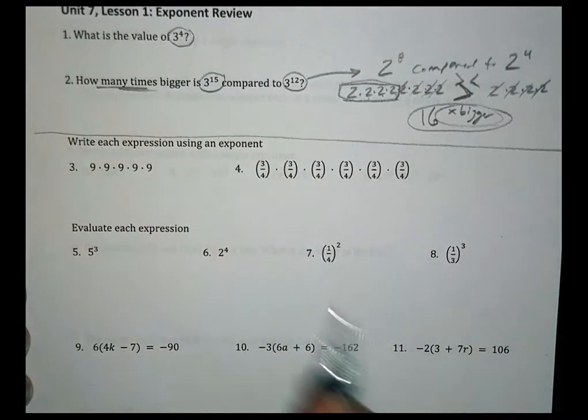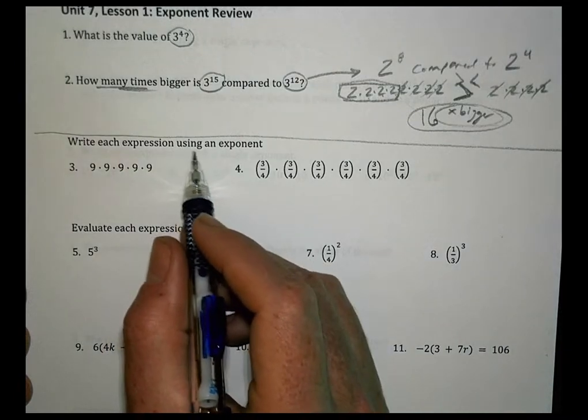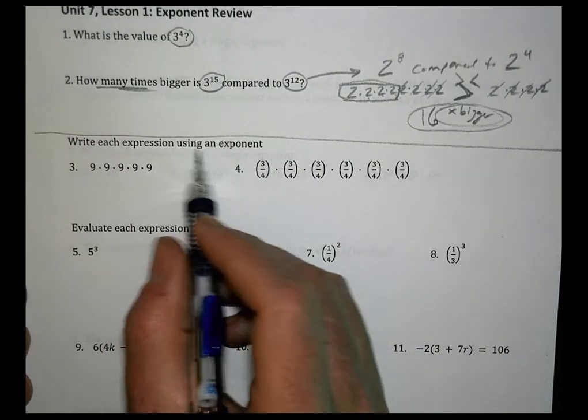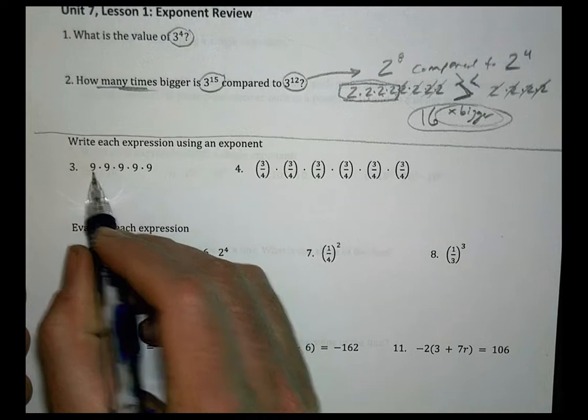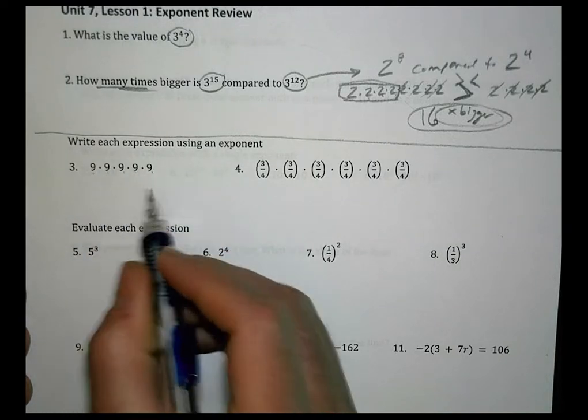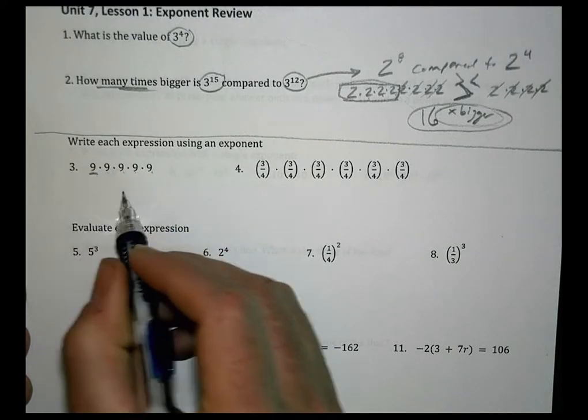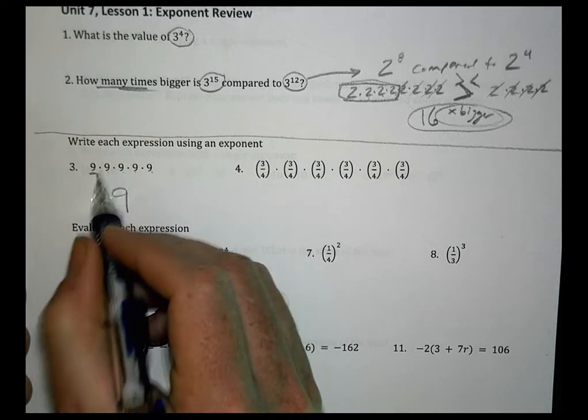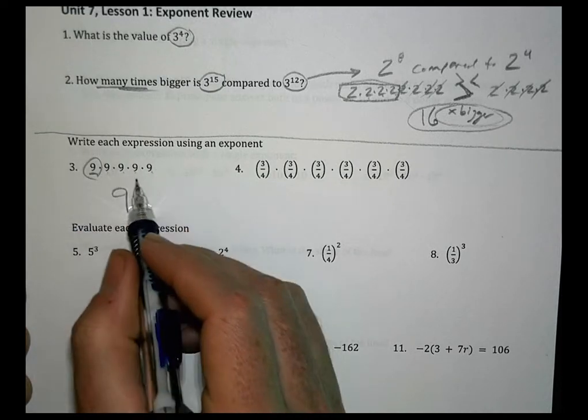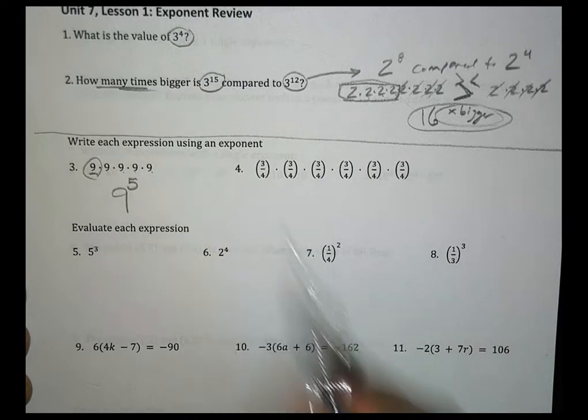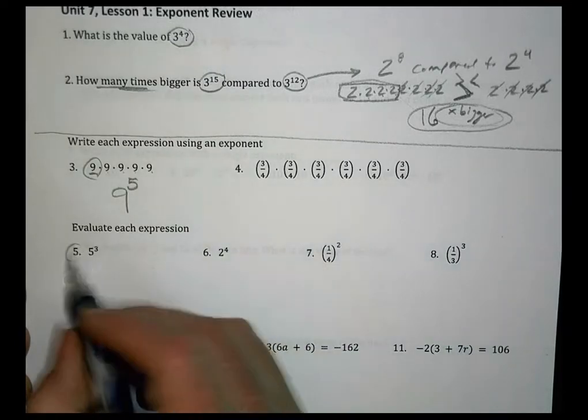Alright, moving down to your odd ones here. Write each expression using an exponent. So here I have 1, 2, 3, 4, 5 nines. So this is my base. My base is going to stay 9. And I see how many there are, which was 5. You have the same thing for the fraction one here.